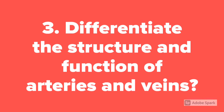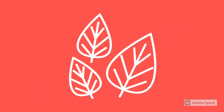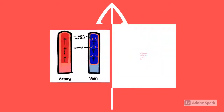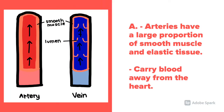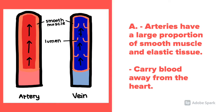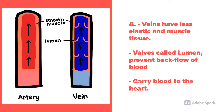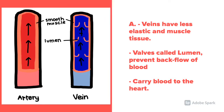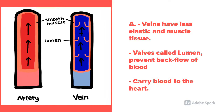Question 3. Differentiate the structure and function of arteries and veins. Arteries have a large proportion of smooth muscle and elastic tissue, and they carry blood away from the heart. Veins, on the other hand, have less elastic and muscle tissue. Valves prevent the backflow of blood. Veins carry blood to the heart.